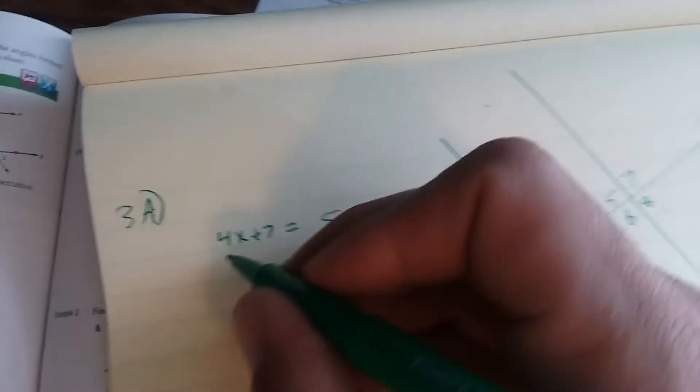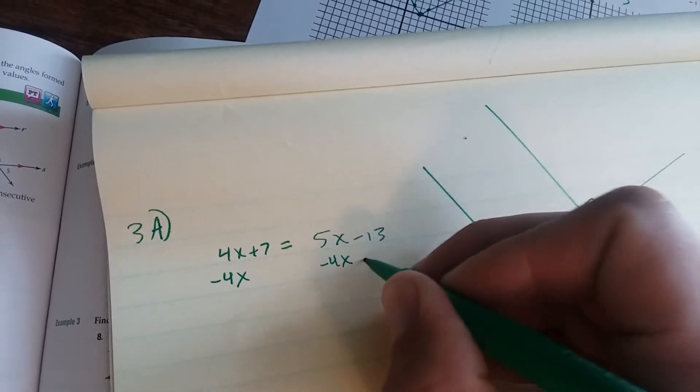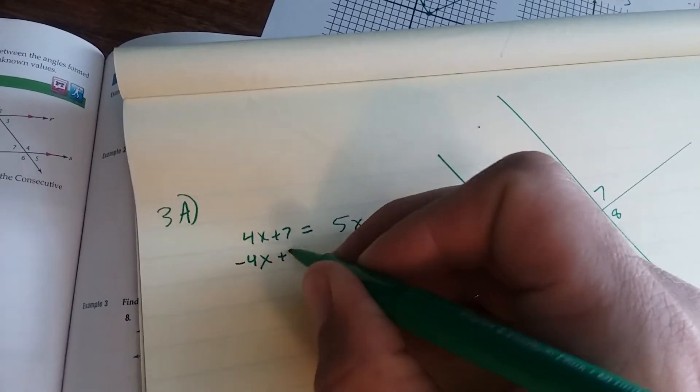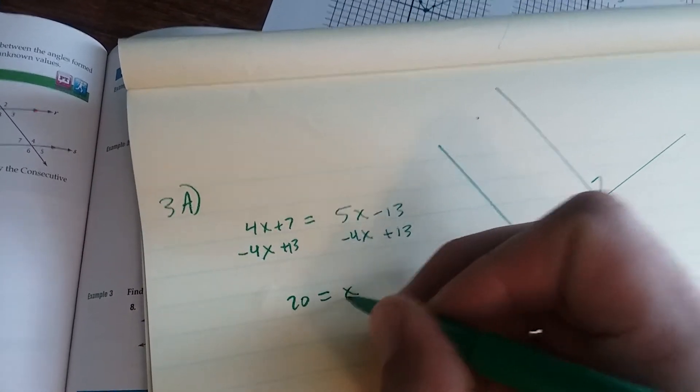Solve for x. I'm going to subtract 4x from both sides and add 13 to both sides. 20 equals x.